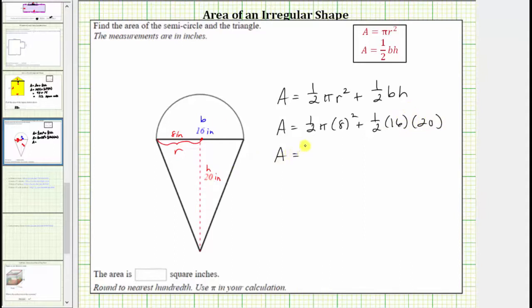Simplifying, eight squared is equal to 64. One-half times 64 is equal to 32 and therefore the area of the semicircle is 32 pi square inches and then we have plus one-half times 16 is eight. Eight times 20 is equal to 160. The area of the triangle is equal to 160 square inches.